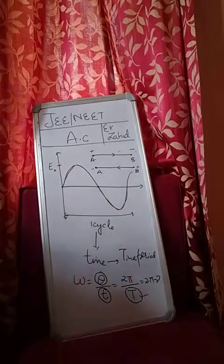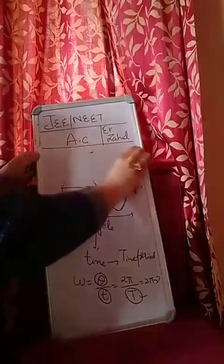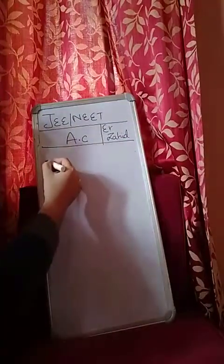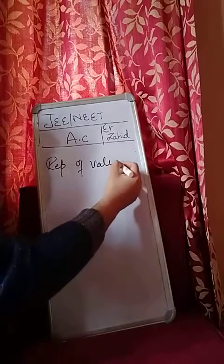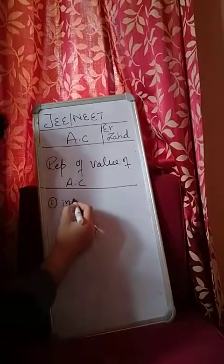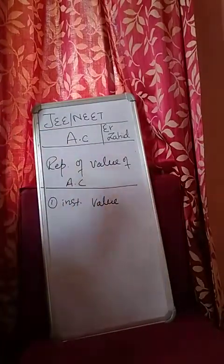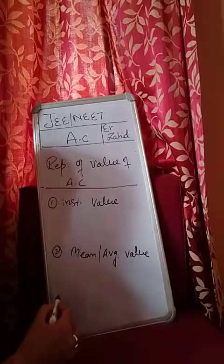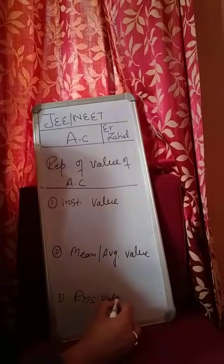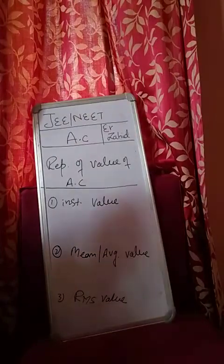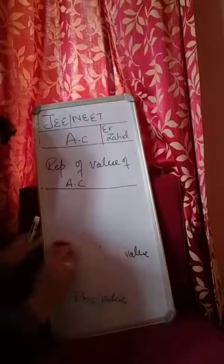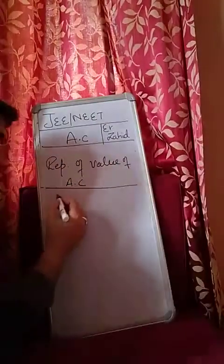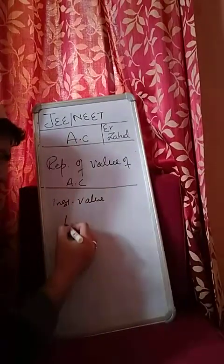So now there are some more important terms related to AC. When we represent the value of AC, how is the value of AC represented? There are three ways. One is its instantaneous value, second is its mean or average value, third is RMS value.